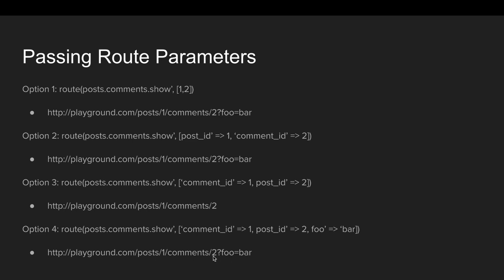If a parameter isn't mapped in your route file, it defaults to a query parameter — like ?foo=bar at the end of the URL. That covers all four options for passing parameters into named routes.